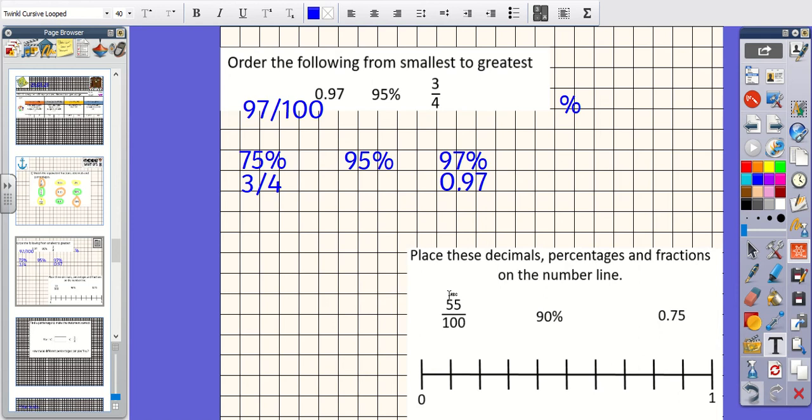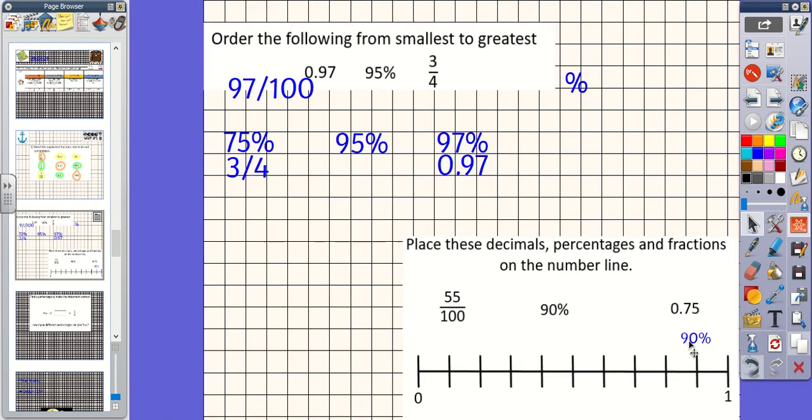Here we have got a number line, and it's asking us to place these decimals, percentages, and fractions on this number line. If I count then, we've got 10, 20, 30, 40, 50, 60, 70, 80, 90, 1. So we have got increments of 10. So we've got 90%, so 10, 20, 30, 40, 50, 60, 70, 80, 90. So 90% is going to go there on that line.